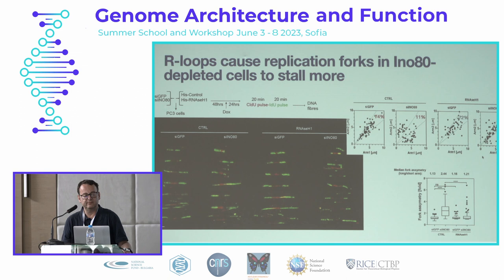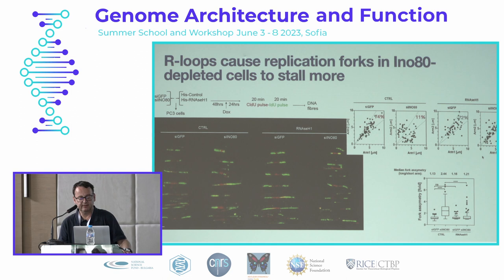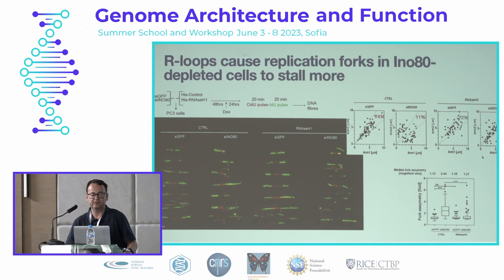Next we checked the symmetry of the forks. When replication forks start from the same origin of replication, they proceed in both directions with more or less the same speed, resulting in symmetrical structures. This was not the case in cells deficient for INO80, where sister forks were more than two times different in length. But overexpression of RNase H1 rescued this defect.